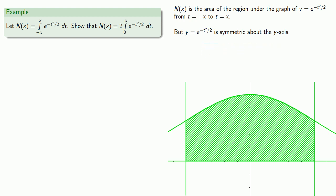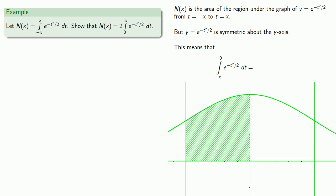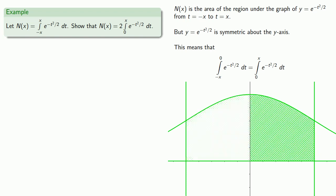And the beautiful thing about symmetry is that it tells you some things are equal. In this particular case, it tells us that the integral from minus x to 0, the area of this region, must be the same as the integral from 0 to x, the area of this region.